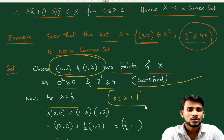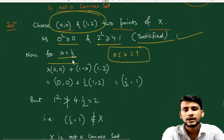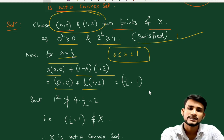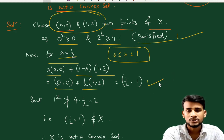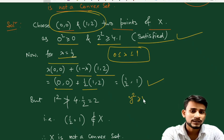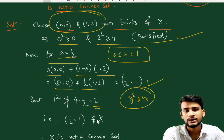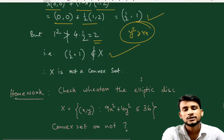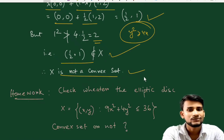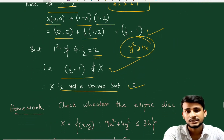For lambda = 1/2, the convex combination gives: (1/2)*(0,0) + (1/2)*(1,2) = (1/2, 1). Now checking: 1² = 1 is NOT ≥ 2*(1/2) = 1... actually 1 is not greater than or equal to 2, so the condition y² ≥ x fails for this combined point. The convex combination (1/2, 1) does not belong to X, so X is not a convex set.